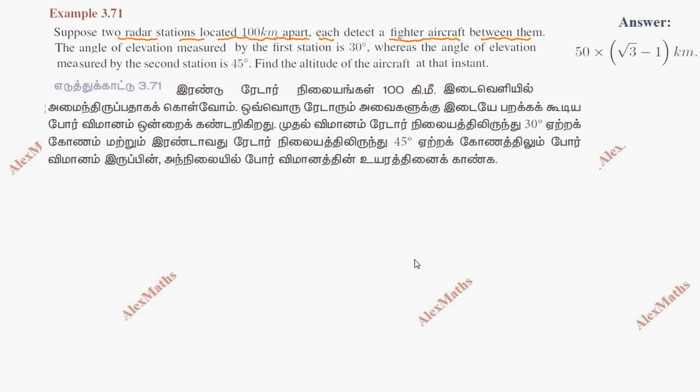We have a straight line. This is radar 1, this is radar 2. The distance is 100 km, and this is the aircraft detected at point A.